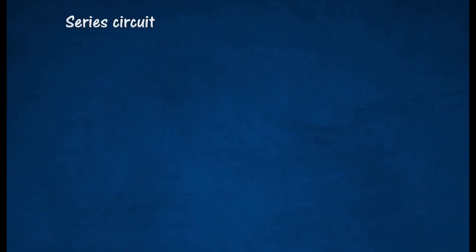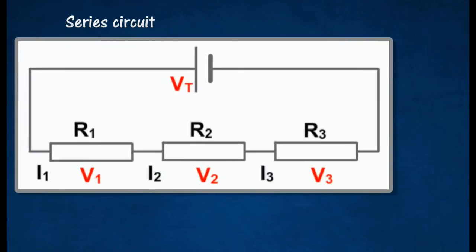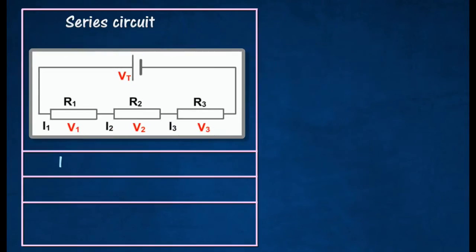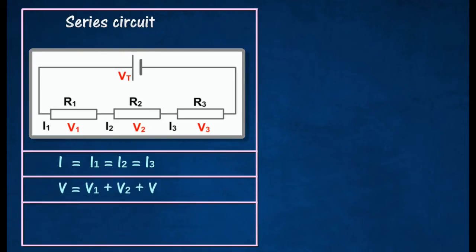For components connected in series, the following rules apply. The electrical current through each component is the same, as all the current has to flow through everything in the circuit. The potential difference across each component adds up to the potential difference across the battery. The total resistance across the components in series is equal to the sum of each resistance across the components.